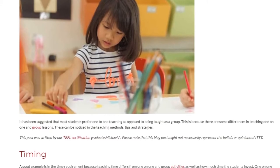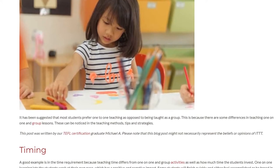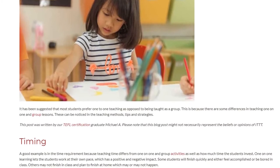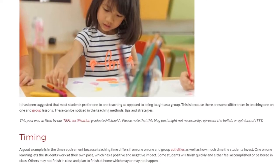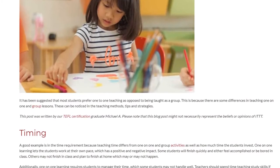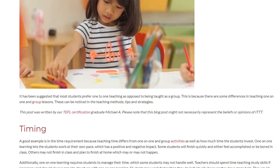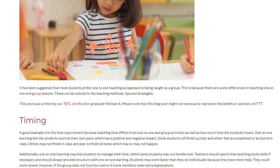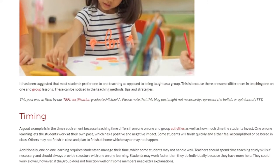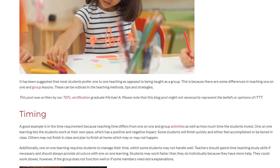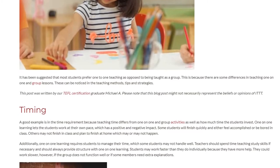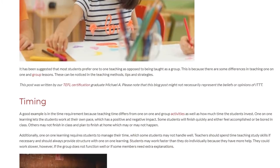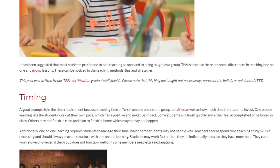Timing. A good example is in the time requirement, because teaching time differs between one-on-one and group activities, as well as how much time students invest. One-on-one learning lets students work at their own pace, which has both positive and negative impacts. Some students will finish quickly and either feel accomplished or be bored, while others may not finish in class and plan to finish at home, which may or may not happen.